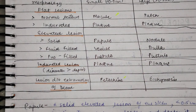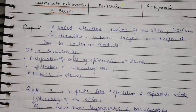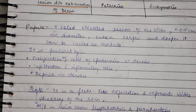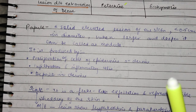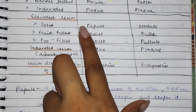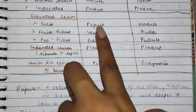Now let's start with psoriasis. Psoriasis is a papulosquamous disorder. If we break all the words, then we will understand what it is. First of all, we need to know about papules. Papule is an elevated lesion — it is solid and it is a small size.